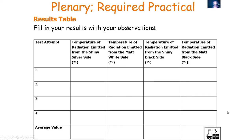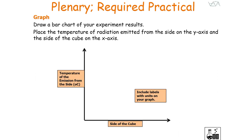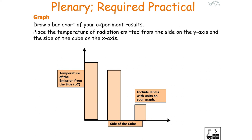Once you've taken your measurements, fill in your results with the following observations: the temperature of the radiation emitted from the shiny silver side, the matte white side, the shiny black side, and the matte black surface. You then draw a bar chart of your experimental results, placing the temperature of the radiation emitted on the y-axis and the colour of the cube side on the x-axis, and draw in your bars.